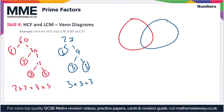Now what we do is draw a Venn diagram. In the circle on the left we'll put all the prime factors of 60, and in the circle on the right we'll put the prime factors of 27. We'll start with 60 and go through the list of prime factors, writing these numbers in their respective areas of the Venn diagram.